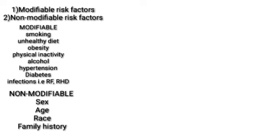On the other side, we have non-modifiable risk factors that we cannot prevent. For example, sex — whether a person is male or female — we don't have control over that; we can't change it. Age is another example: as a person progresses to an older age, the risk for cardiovascular conditions increases, and we don't have control over age. Race also matters, as people from specific races have predisposing factors to cardiovascular conditions. Finally, family history of cardiovascular diseases is also a non-modifiable risk factor.